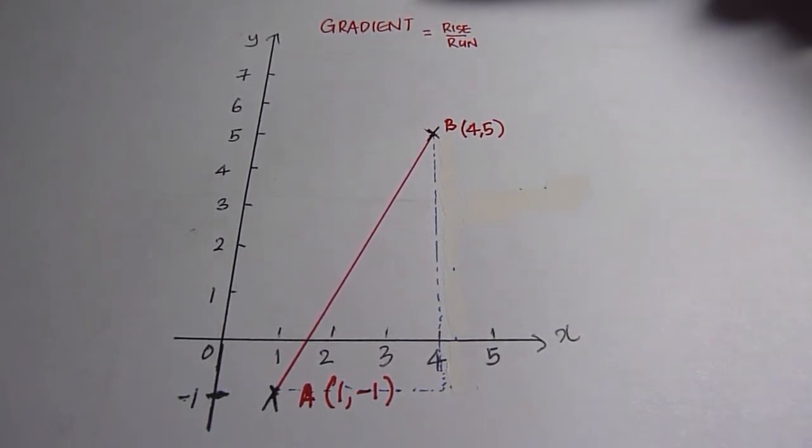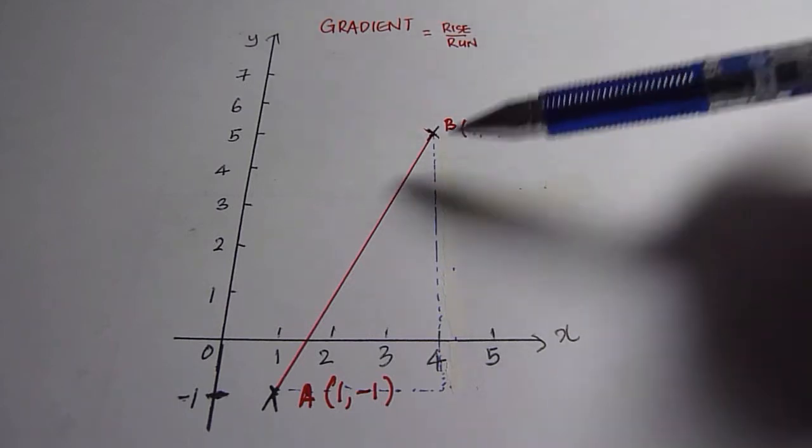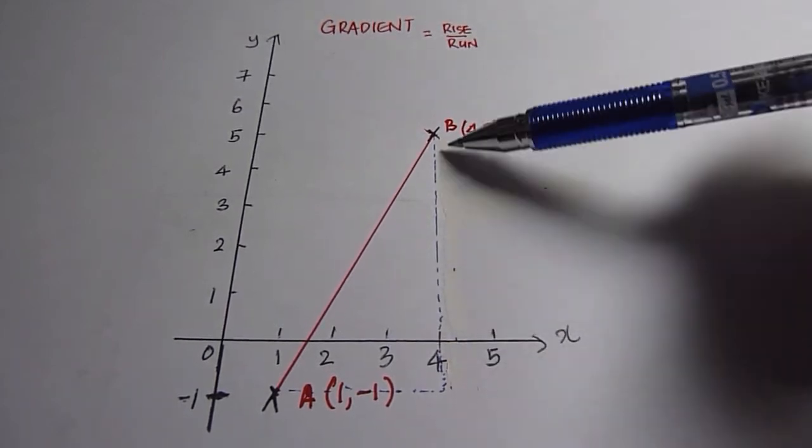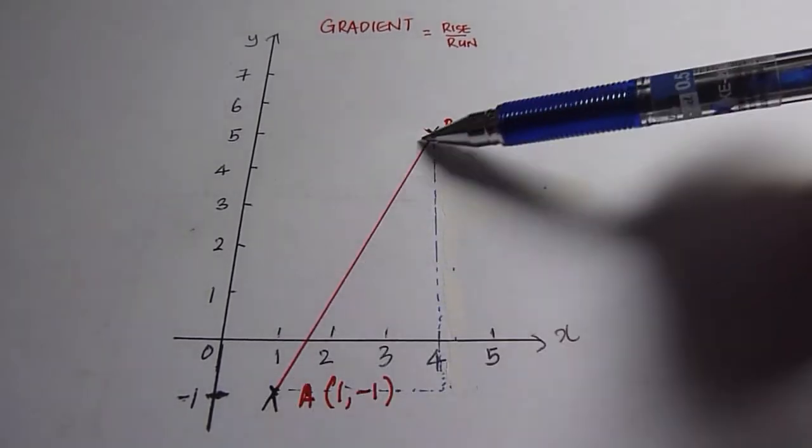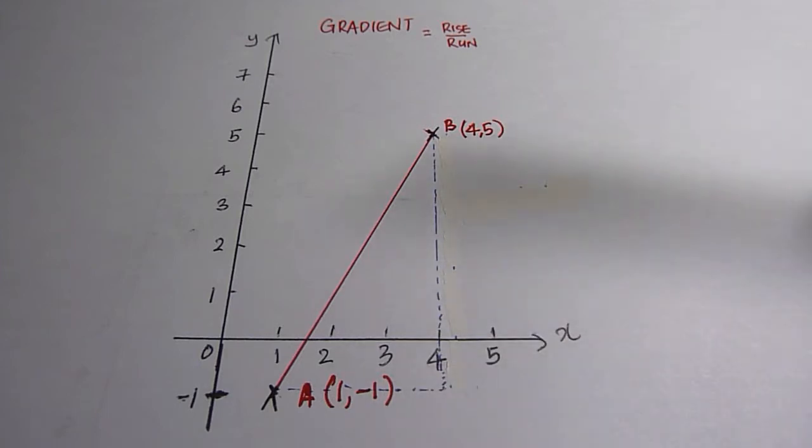Gradient is a measure of how steep or gentle a line is, and it's often computed using the rise, which is the change in the vertical distance, over the run, which is the change in the horizontal distance. This is the rise between two points A and B, and this is the run between the two points A and B.